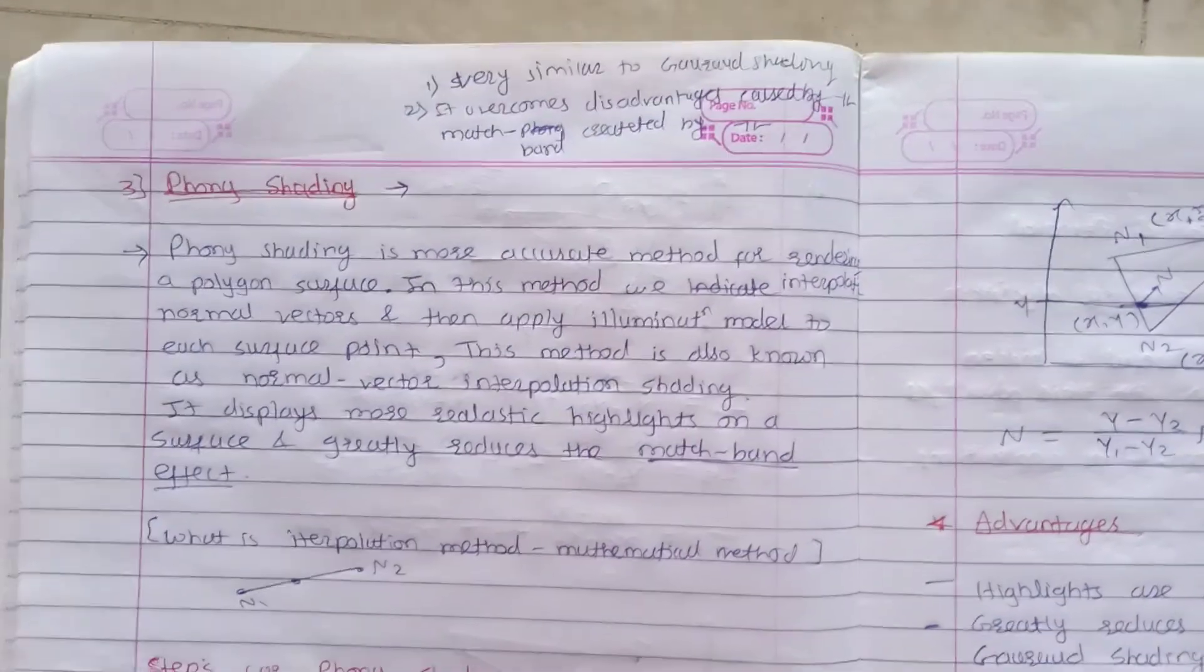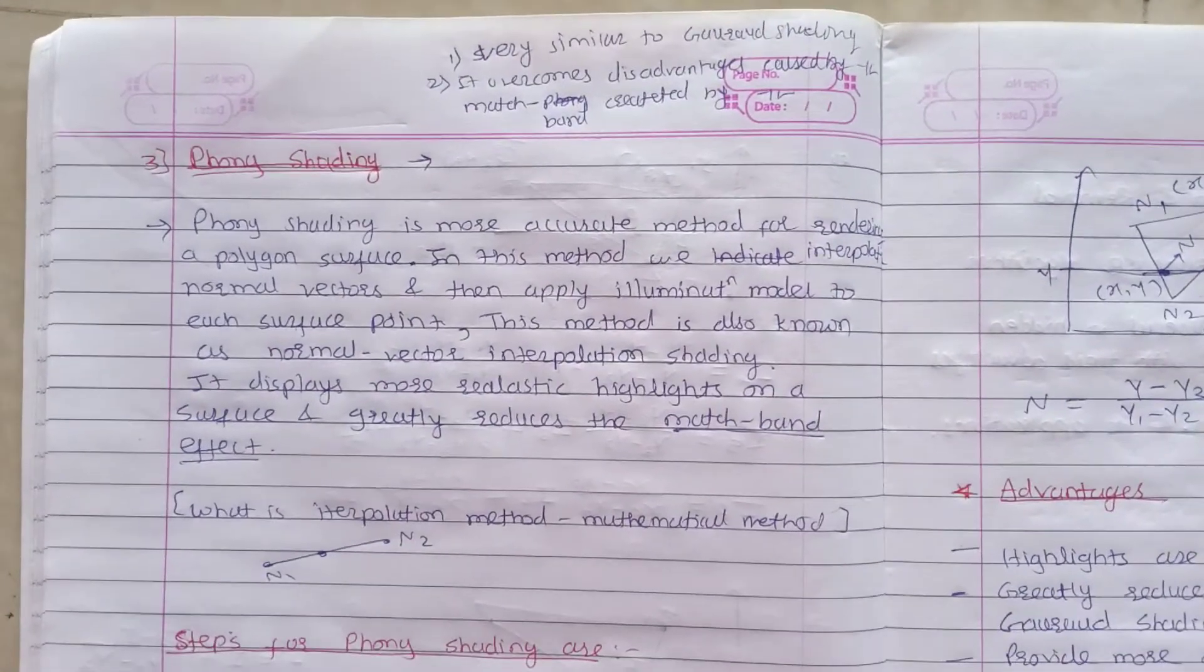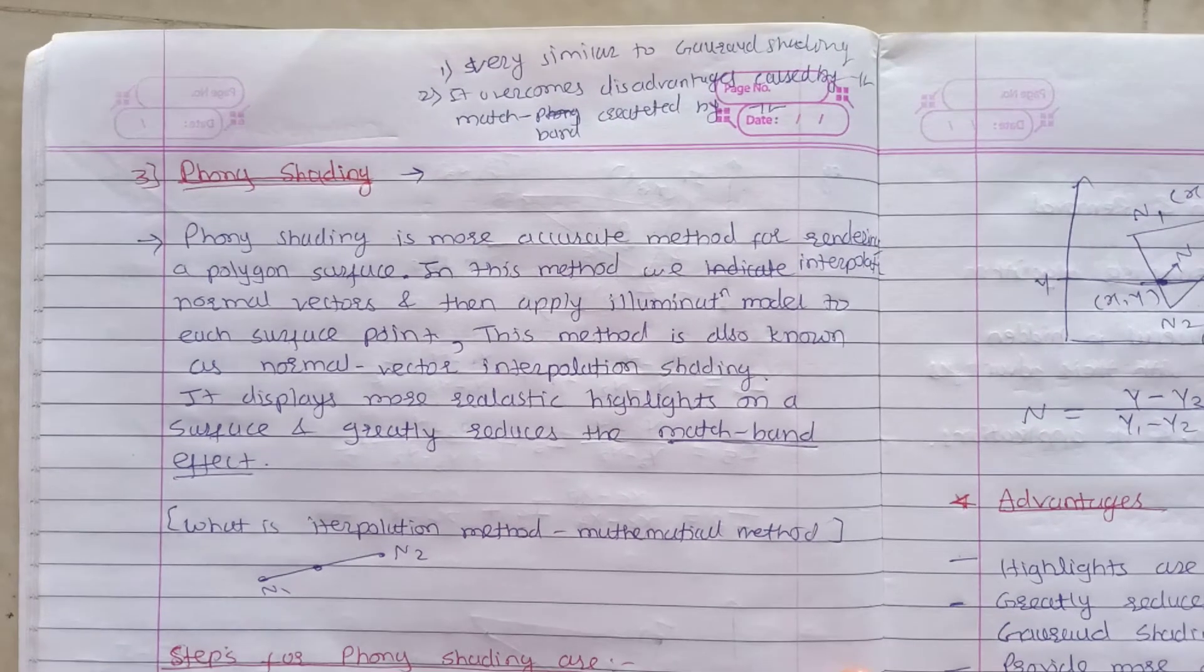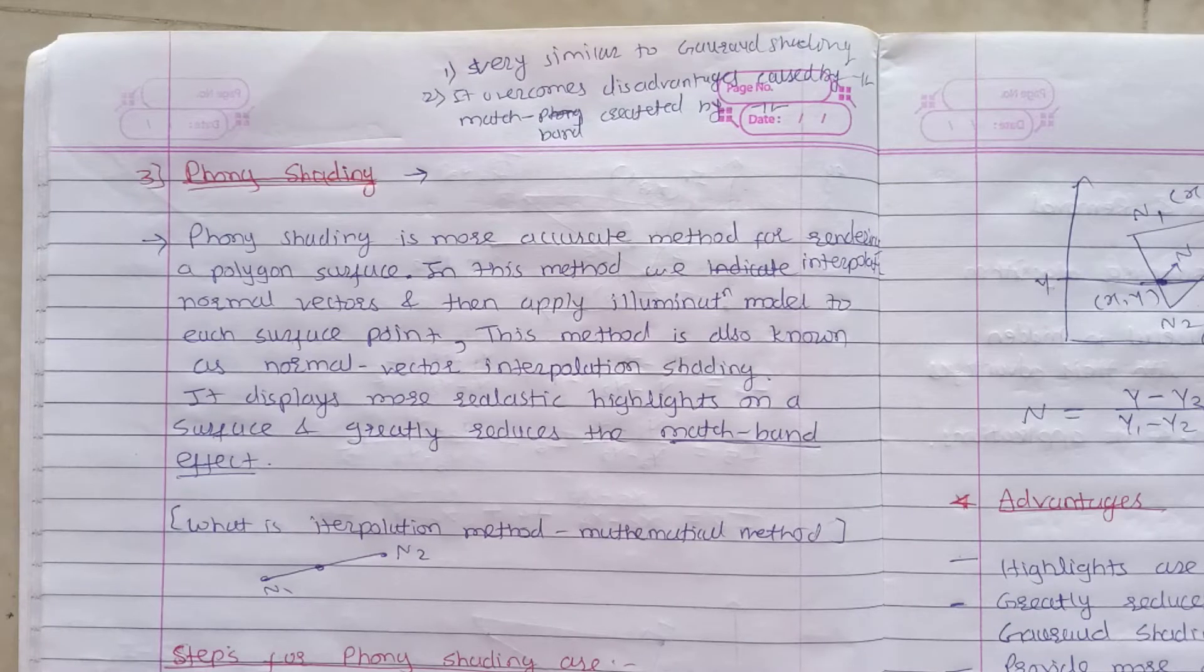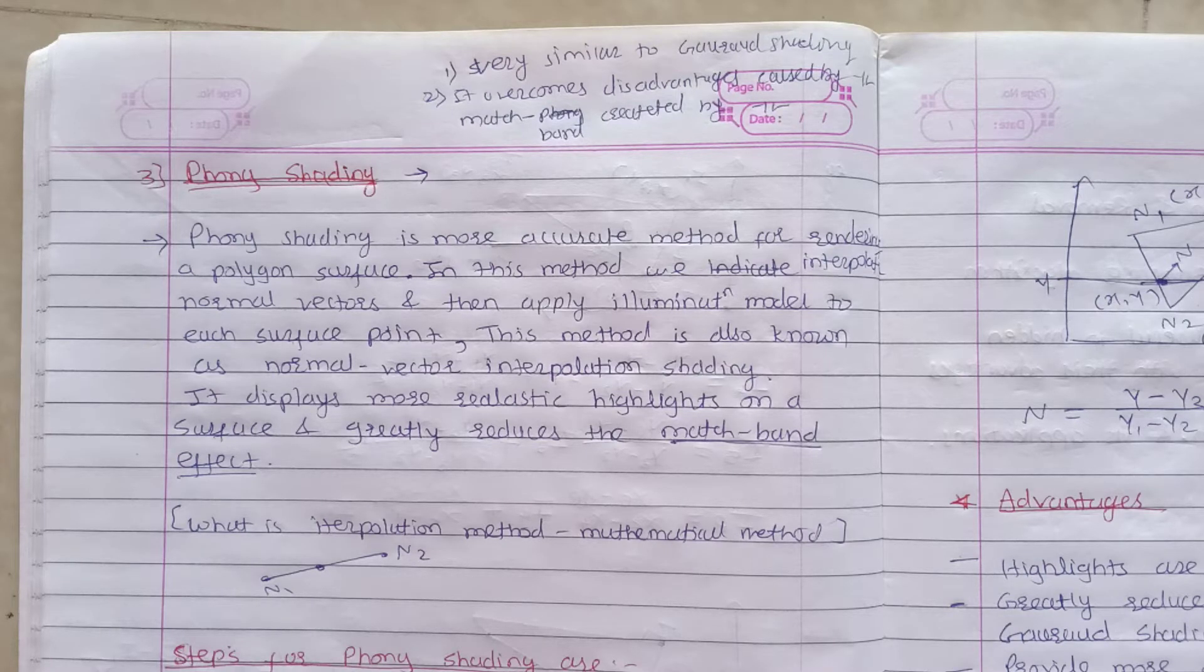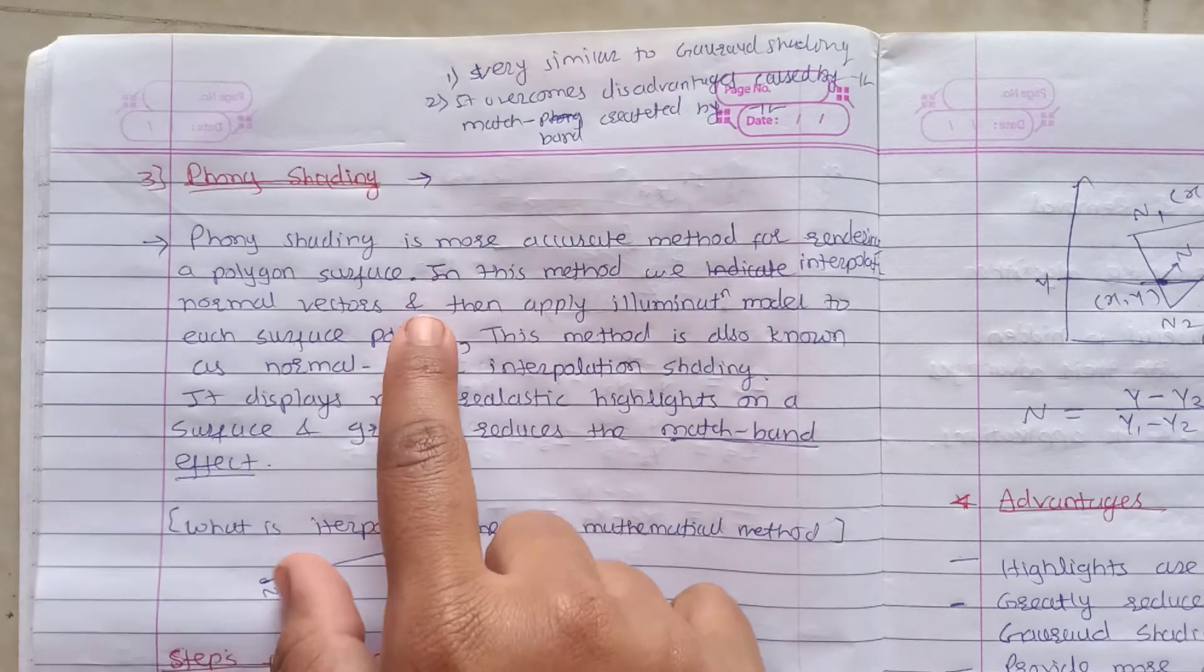In this lecture we are going to see the next shading method, that is Phong shading algorithm. This is similar to the Gouraud shading that we discussed in the previous lecture. It overcomes the disadvantages caused by the Mach band created by Gouraud shading.